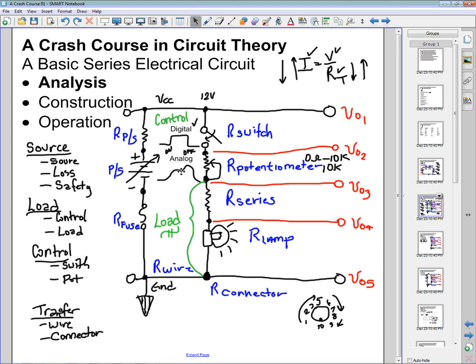And the analog control element, which consisted of the potentiometer. We said that the potentiometer can have a minimum resistance, and that minimum resistance will give you a maximum current through the lamp. And then you can have a maximum resistance, which gives you a minimum current through the lamp.